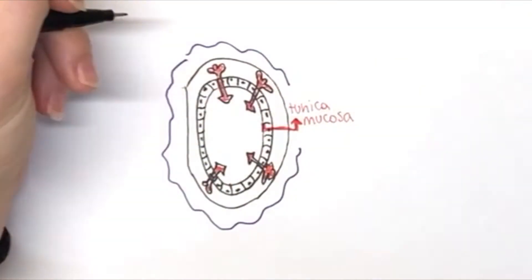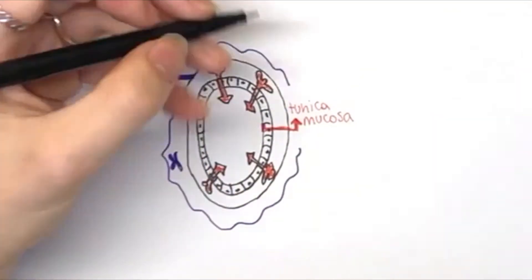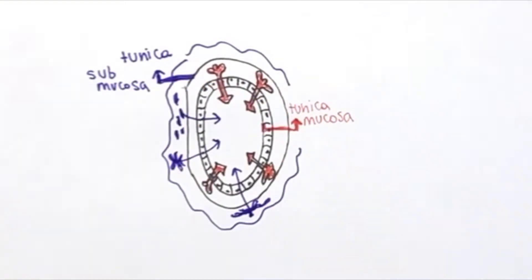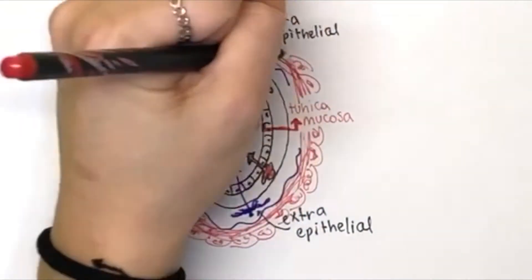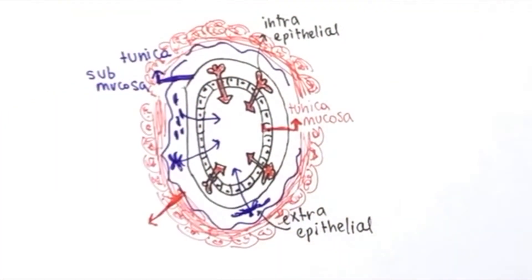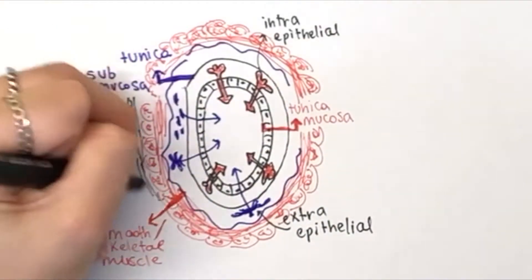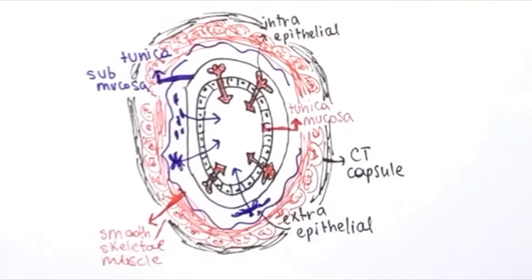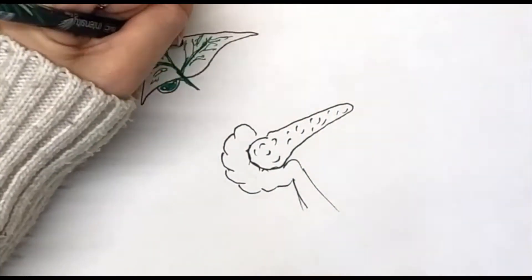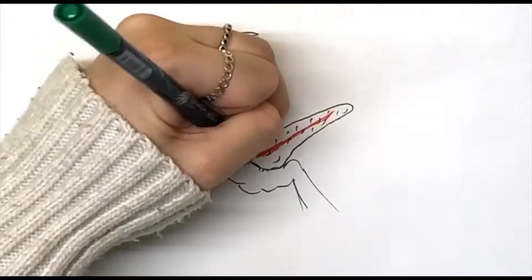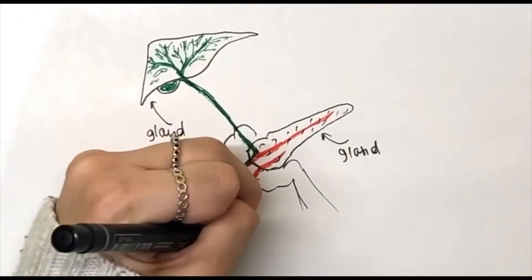We can further divide intramural glands into intra and extra epithelial, depending if they are inserted within the tunica mucosa layer of the organ or in the other tunica. We consider the lubricating glands of the trachea located in the tunica submucosa extra epithelial glands. Glands that extrude from the wall of the organ they serve are called extramural. The pancreas and the liver can be taken as examples.